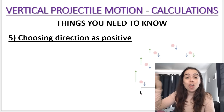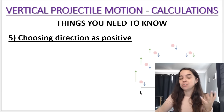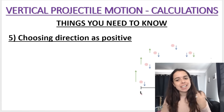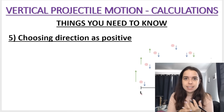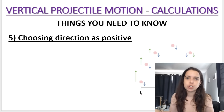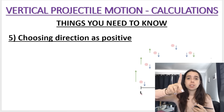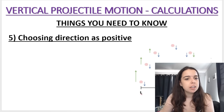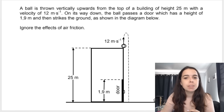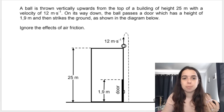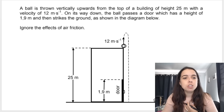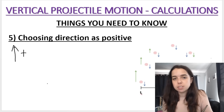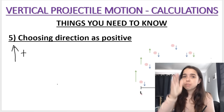This is where a lot of students go wrong — choosing a positive direction is essential, it's vital for this section. In rare scenarios, the question selects this for you. The question might say 'upwards was chosen as positive,' or they give you a graph that forces a direction. However, if the question does not tell you which direction is positive, you get to make that selection. When you make that selection, indicate it at the top of your page — for example, write 'upwards is chosen as positive.' This influences all of your calculations.